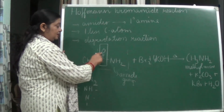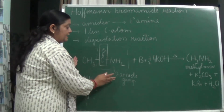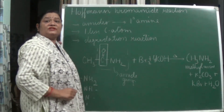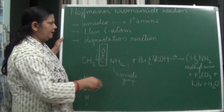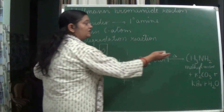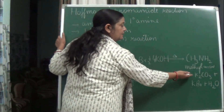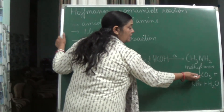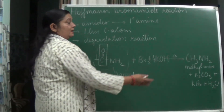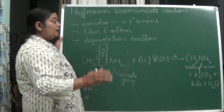Taking an amide group — which contains C=O and NH₂ — and adding bromine (Br₂) and potassium hydroxide (KOH), we get CH₃NH₂, which is methylamine, a primary amine. The stable byproducts are K₂CO₃ (potassium carbonate), KBr (potassium bromide), and H₂O.